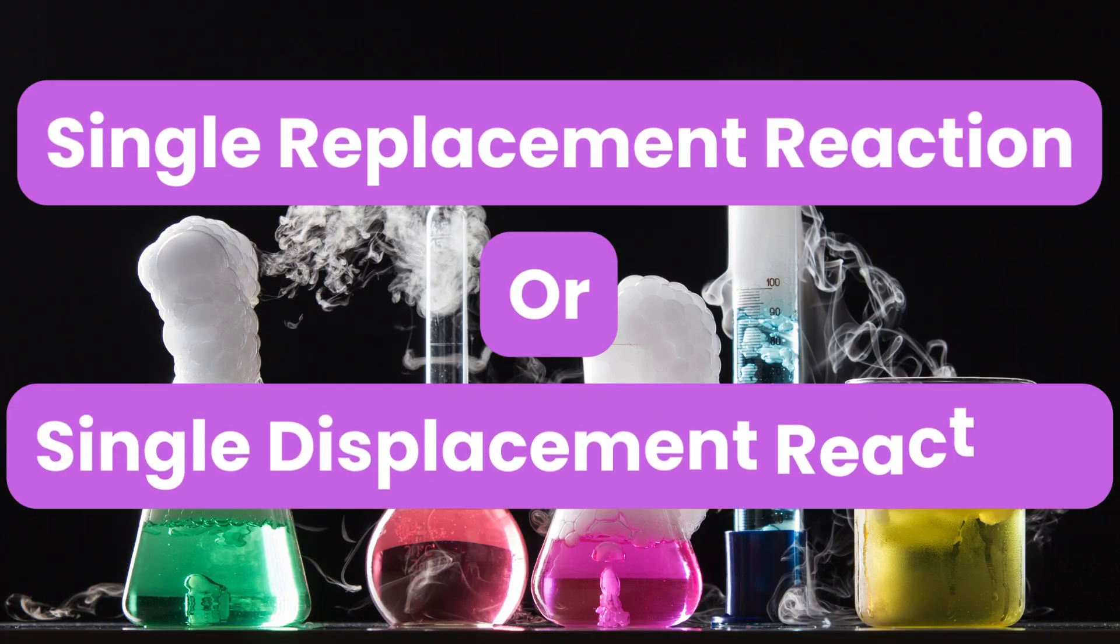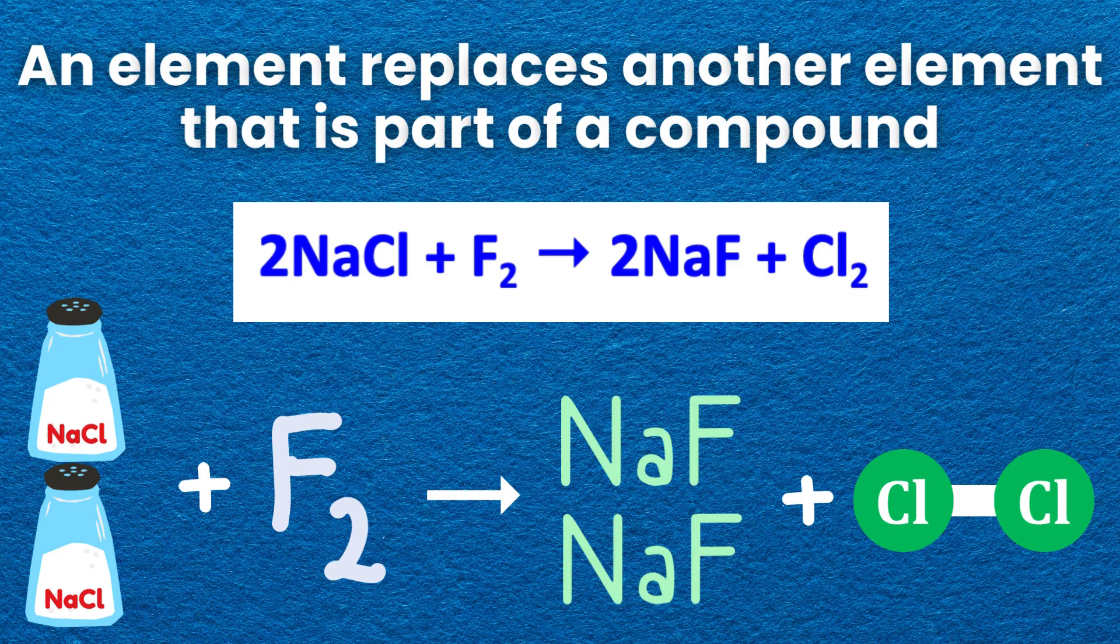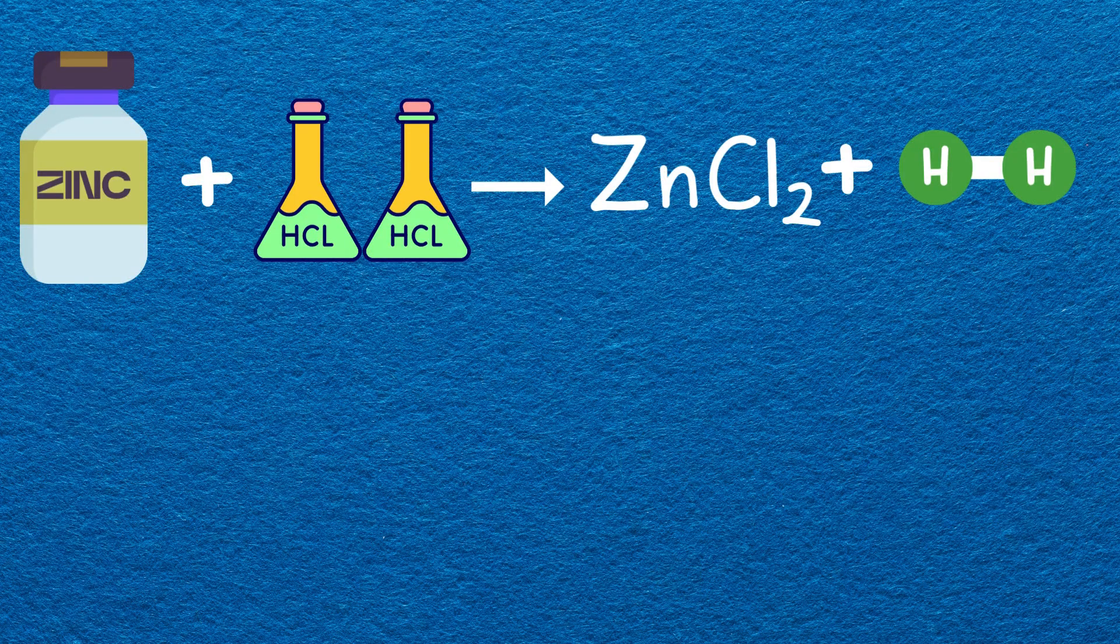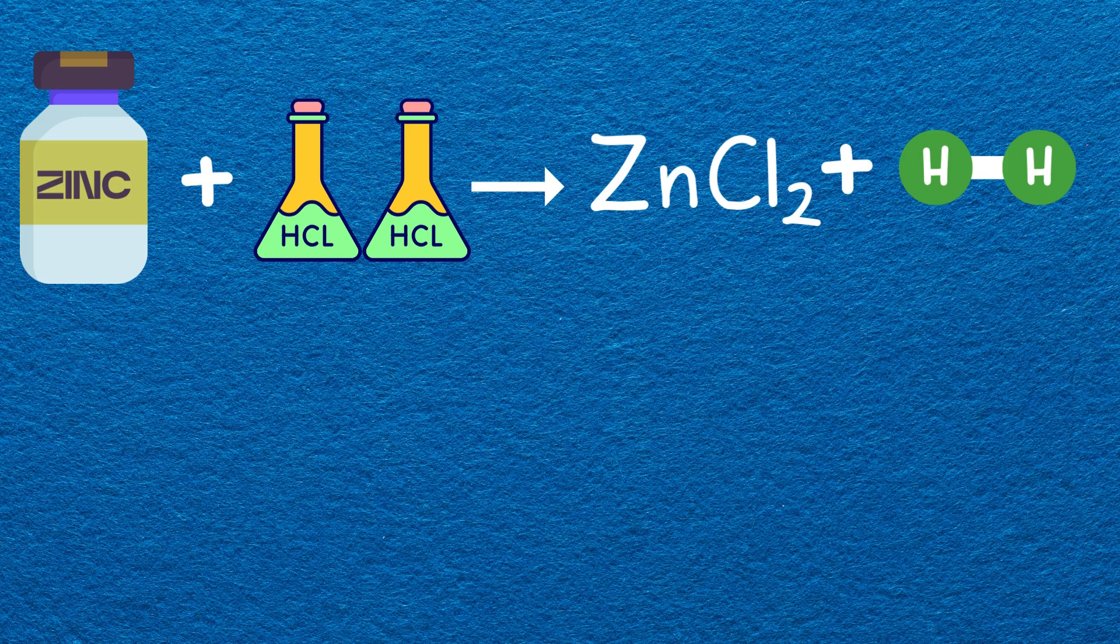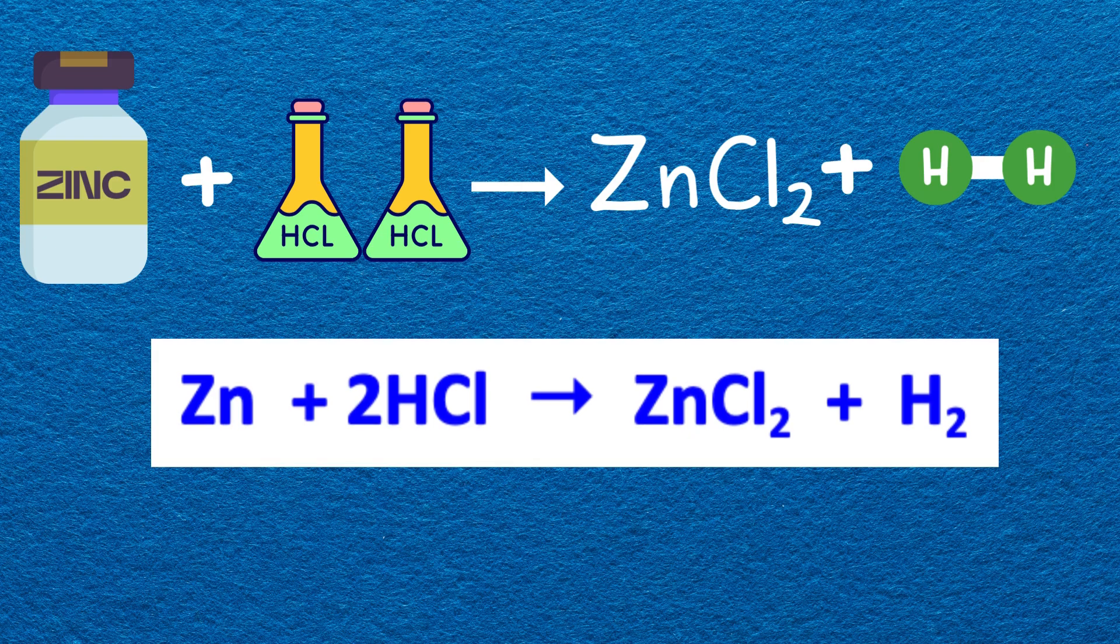Single replacement reaction or single displacement reaction. In this reaction, an element replaces another element that is part of a compound. As an example, zinc plus hydrochloric acid gives zinc chloride and hydrogen. Zn plus 2HCl gives ZnCl2 plus H2.